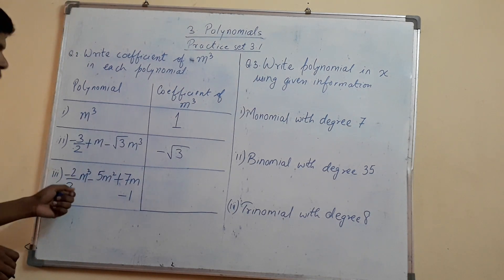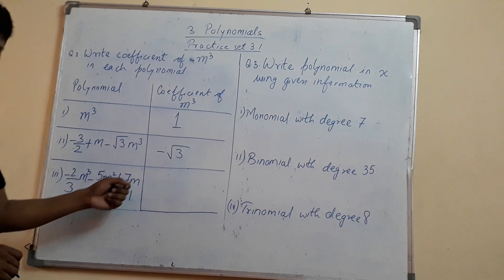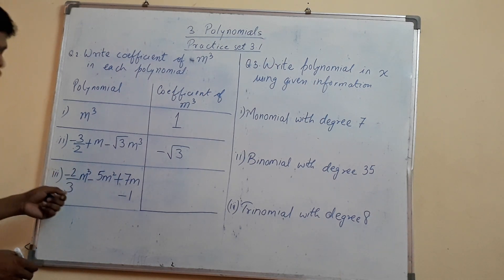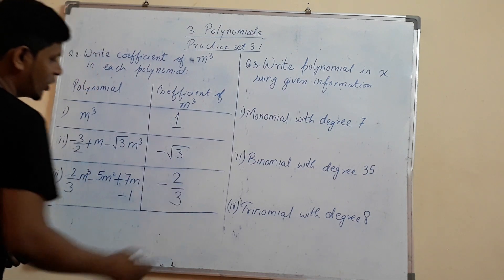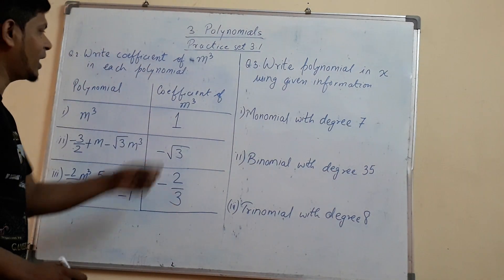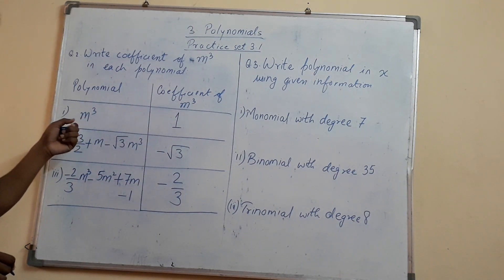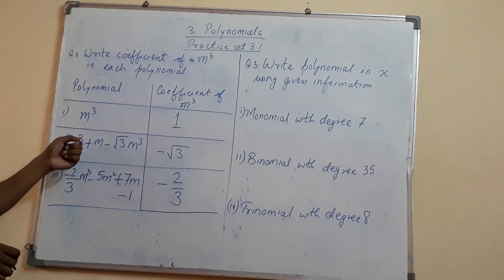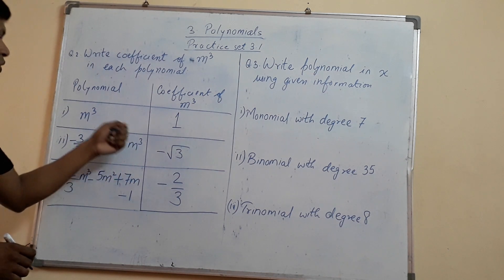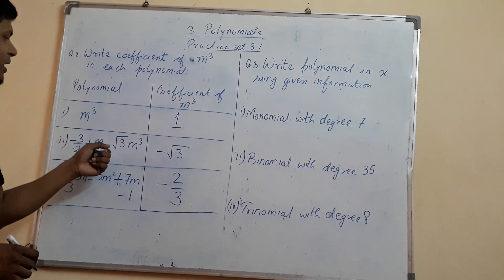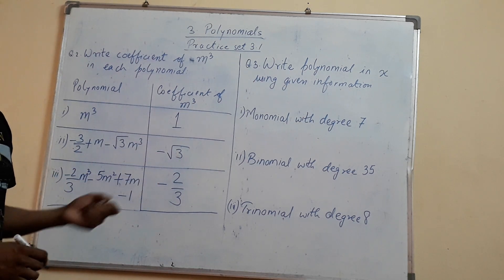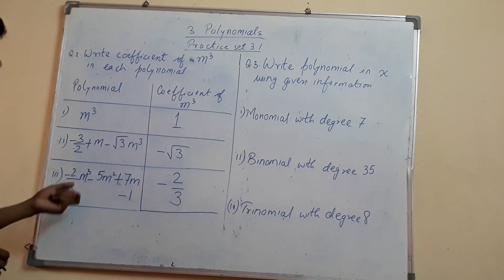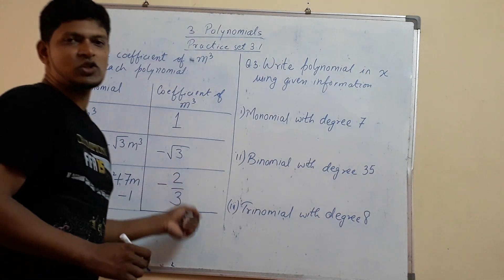The third one is given: minus 2 upon 3 mq minus 5m squared plus 7m minus 1. Here the coefficient along with mq is minus 2 by 3. So to summarize: the coefficient of mq is 1 in the first polynomial because there is no number written but it is assumed as 1. In the second, minus root 3 mq gives coefficient minus root 3. In the third, minus 2 by 3 mq gives coefficient minus 2 by 3.